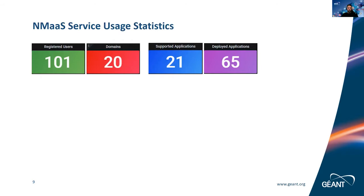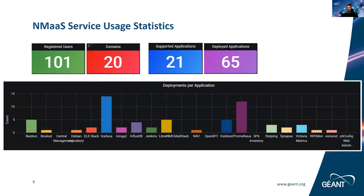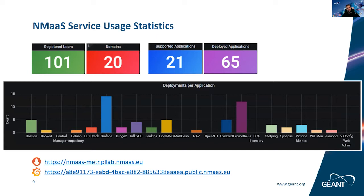A few words about current usage of the NMS service run centrally by the GÉANT project: we have 100 users with 20 deployed domains — those isolated environments. We support 21 applications, and currently there are 65 instances of applications running. This chart shows which applications are currently running; the most popular ones are clearly Prometheus and Grafana. These graphs are themselves taken from Prometheus and Grafana instances deployed on NMS.